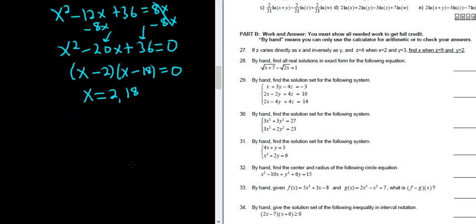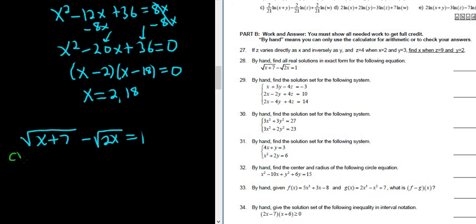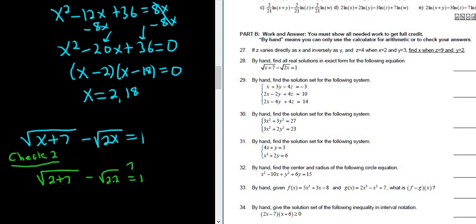Because this is an equation with square roots, we must check our answers — ones that don't check are called extraneous solutions. Let's check x equals 2: square root of 2 plus 7 minus square root of 2 times 2 equals square root of 9 minus square root of 4, which is 3 minus 2, and that equals 1. Yes, so 2 is confirmed as an answer.